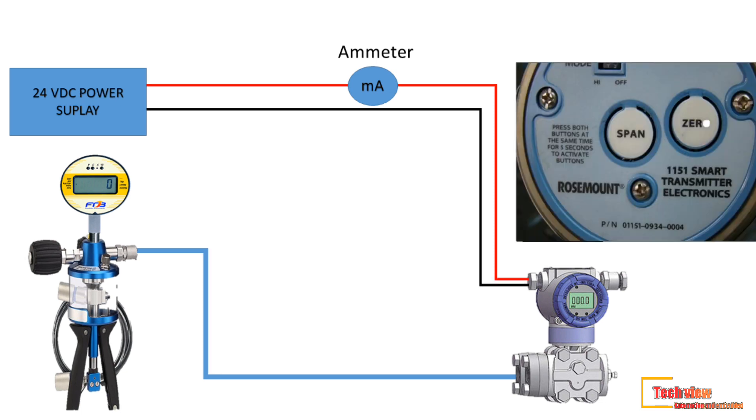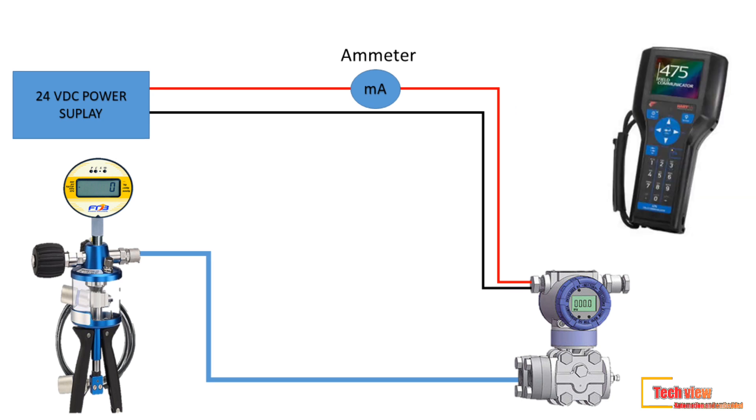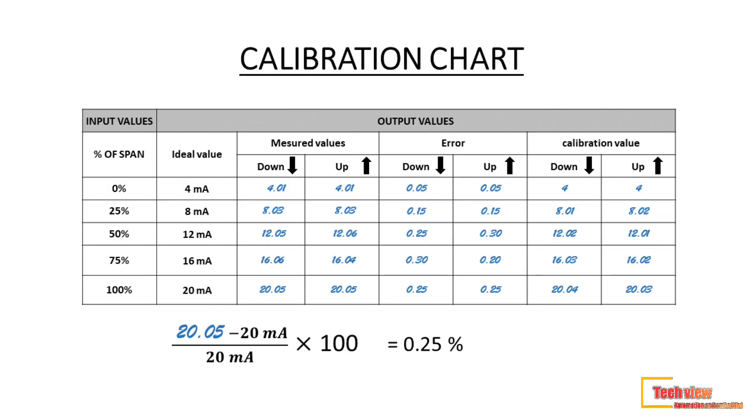For the analog transmitter, there are two buttons for zero and span adjustment. And the latest digital transmitters have the options to adjust the sensor signal and output signal using a handheld communicator. For sensor adjustment, it's called sensor trim, and output adjustment is called analog output trim. After finishing the zero span adjustment, we have to inject the pressure again and note down the calibration value. Then again check the error percent and verify the error should be below the tolerance. This is the way a calibration process is done.